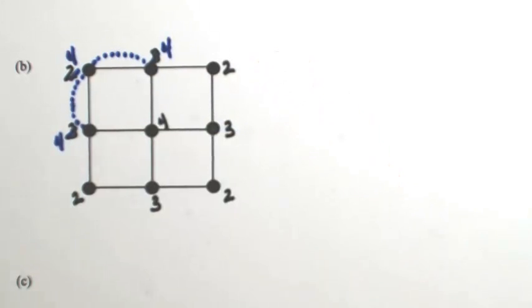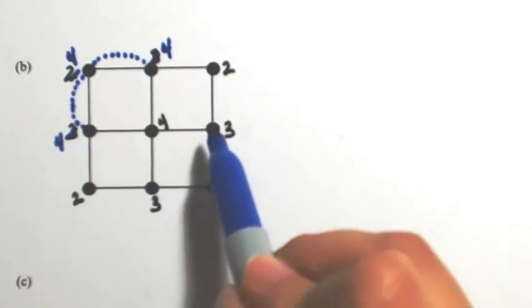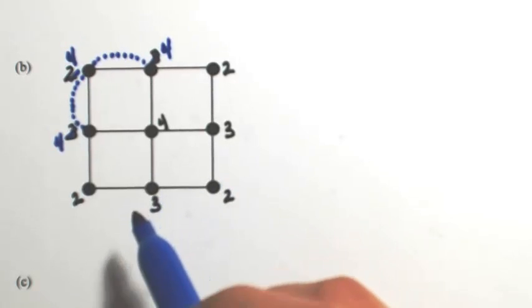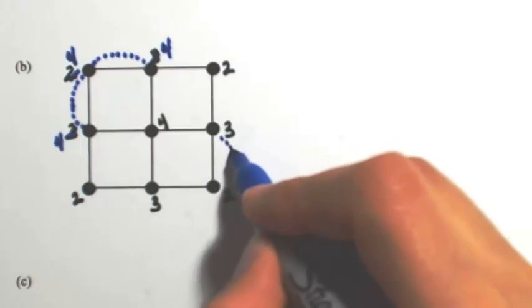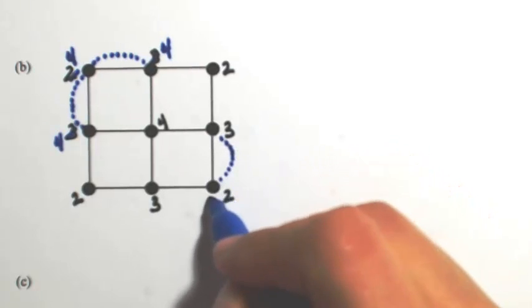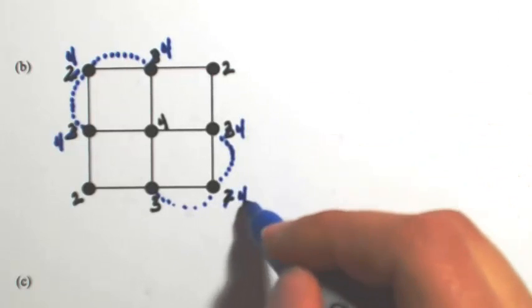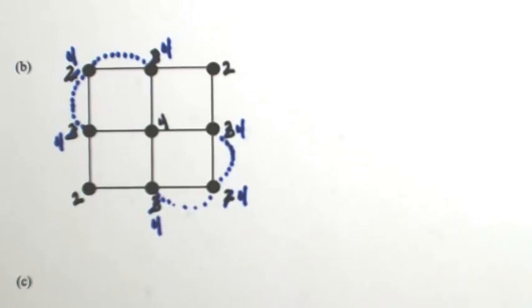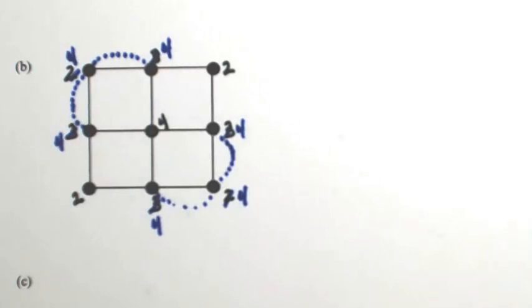Then we'll do the same thing on the right. I'm going to go from the right three to the bottom three, but again I cannot connect straight away because there is no edge doing that. What I can do is travel around and loop through other vertices, just like on the left. So the three becomes a four, the two becomes a four, and the three becomes a four. Now every vertex is even, and we end up reusing one, two, three, four edges twice.